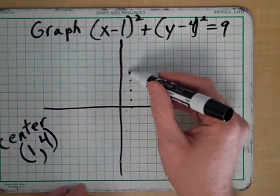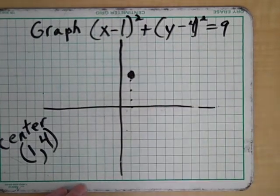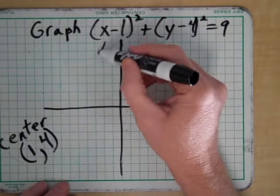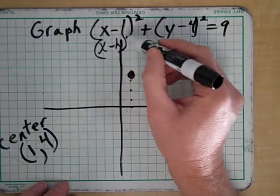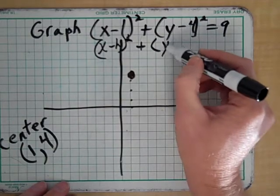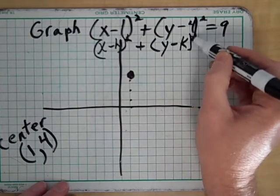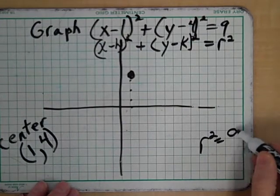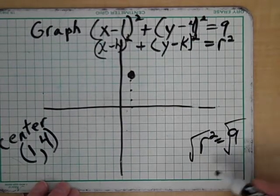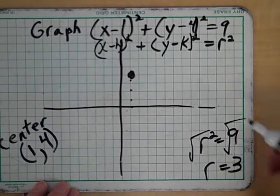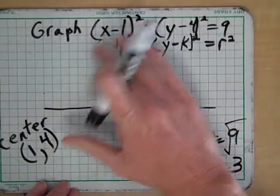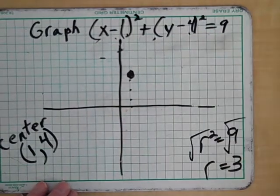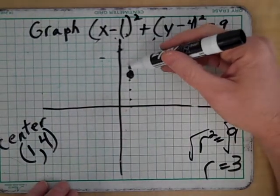[Counting] One, two, three, four. The center is right there. Now, this is x minus h squared plus y minus k squared equals r squared. So r squared is nine. Take the square root and you'll get the radius is three. Get this out of the way for a little bit. That was just to illustrate from the standard form. The radius is three.